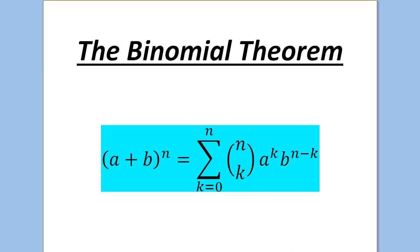The binomial theorem states that (a + b) all to the power of n is the sum from k equals 0 to n of n choose k times a to the k times b to the n minus k. That n choose k notation in parentheses just after the summation sign means n choose k. The powers of a and b always add up to n — if you increase the power of a by one you decrease the power of b by one. That's very important.